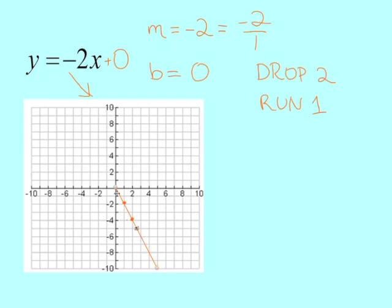So just extend your line, and add your arrows, and you're done. So it's a nice negative, steep slope.